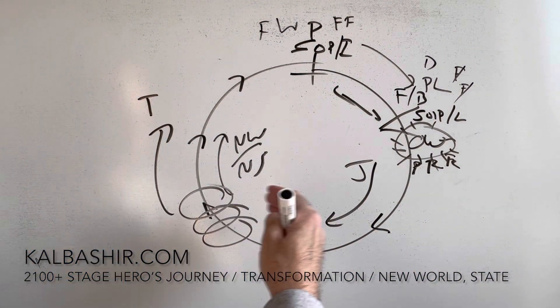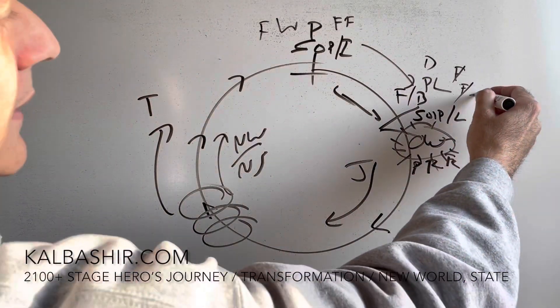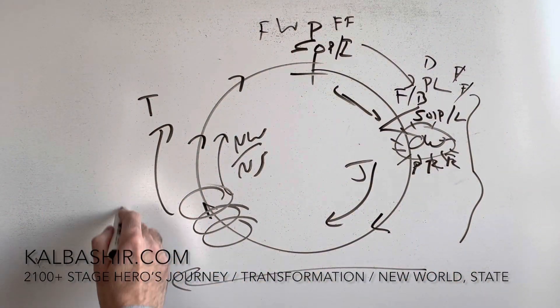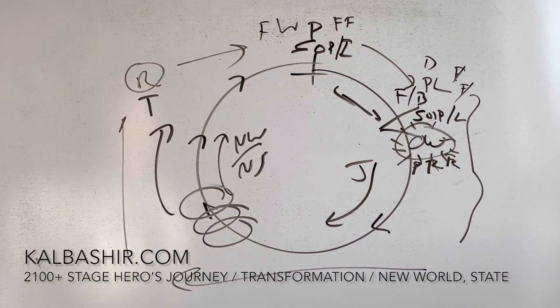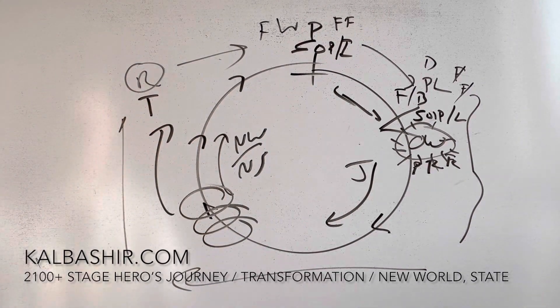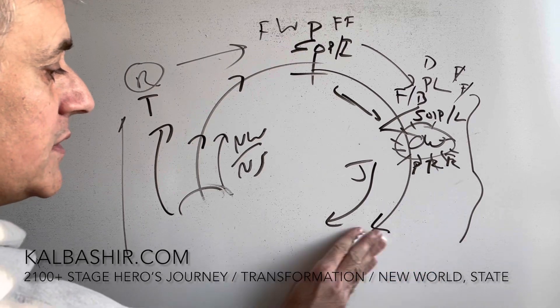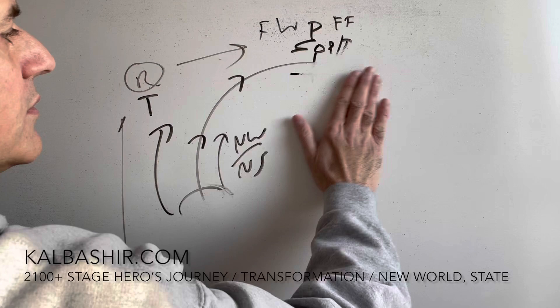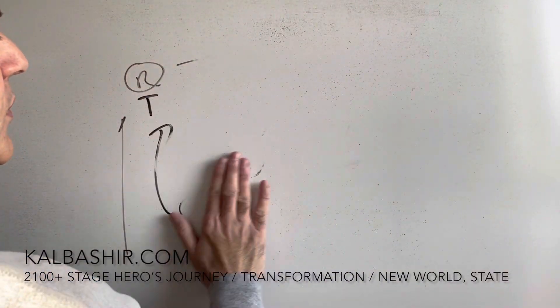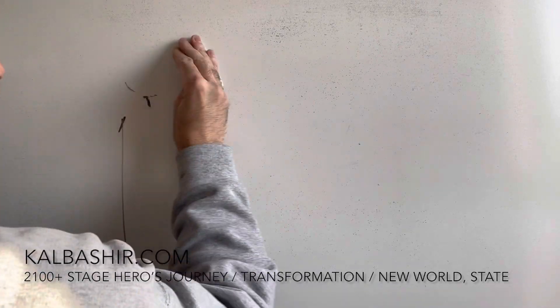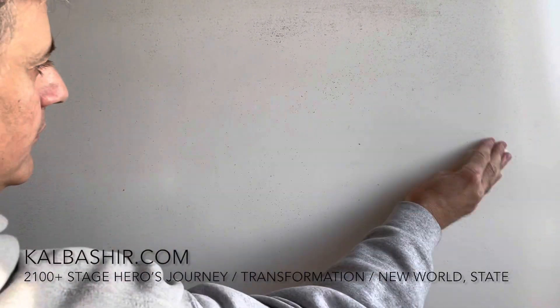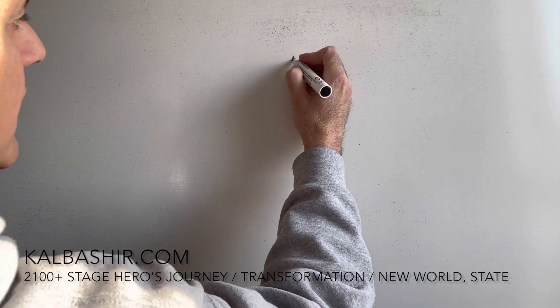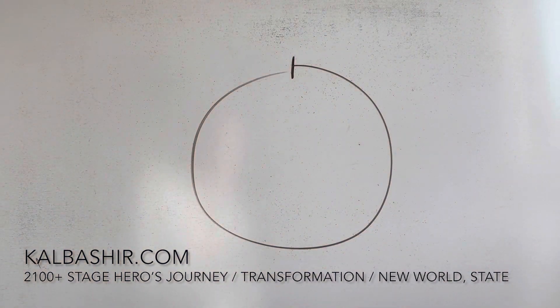When you're here, you're not able to return. You have to go forward, grow, learn, mature, all the way around until you're ready to return. That's basic story architecture, the fundamental framework that all successful stories are based around. I go over that in great detail in the 2100 Stages Journey Transformation Movement through New Worlds and States, which you can purchase off the website.